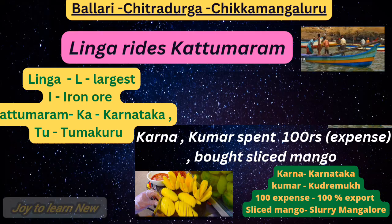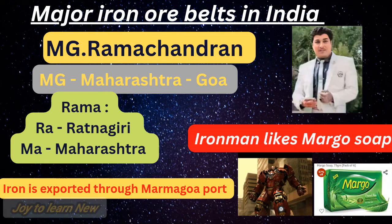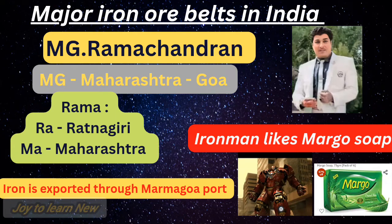Next is the Maharashtra-Goa belt. Just remember MGR: M stands for Maharashtra, G stands for Goa. His full name is MG Ramachandran — 'Rama': R-A stands for Ratnagiri, Ma stands for Maharashtra. Second shortcut: 'Iron man likes Margo soap' — it means iron is exported through Marmagao port. Margo and Marmagao have a resemblance — that's why I used it. So iron is exported through Marmagao port.